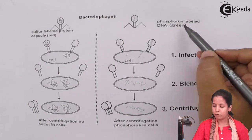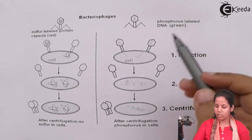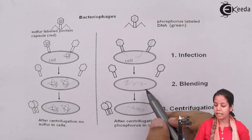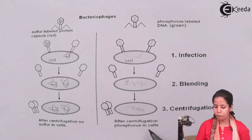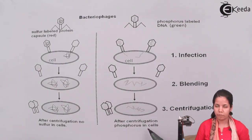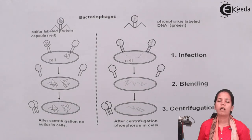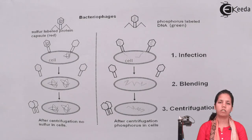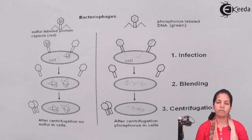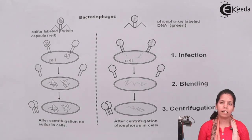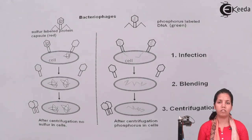In contrast, the phosphorous-labelled green DNA, when injected into S. typhi bacteria, gained entry into the bacterial cell, integrated its genome, and after centrifugation, phosphorous was found inside the cell. This proved that something was being taken over — specifically the DNA. This transduction process helped study genetic material and led to the conclusion that DNA could be the genetic material.